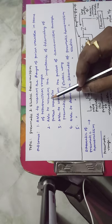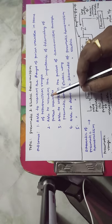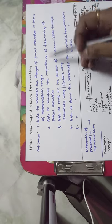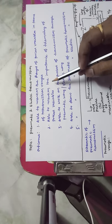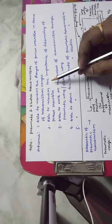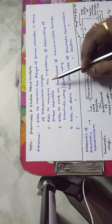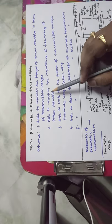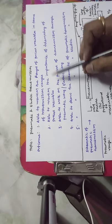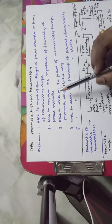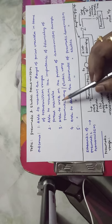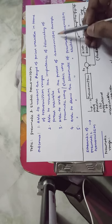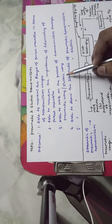The student will be able to mention the importance of telemetry of process variables, because whenever we are going for a remote measurement, we must be in a position to state the importance of telemetry. The third outcome is that the student will be able to write on the process of transmission through pneumatic or electrical means.